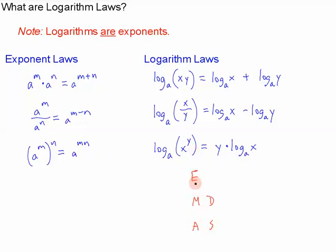So exponents inside drop down on the order of operations and become multiplication outside. So when you're going inside to outside, you go down the ladder. And multiplication inside, this first law, becomes addition outside. So multiplication drops down to addition and division drops down to subtraction.